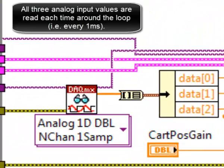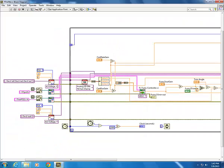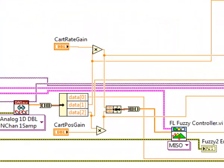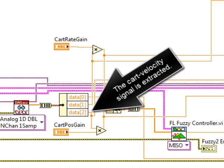All three analog input values are read each time around the loop, every one millisecond. The cart position signal is extracted. The cart velocity signal is extracted.